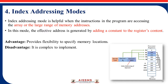Index addressing mode is helpful when instructions in a program access arrays or a large range of memory addresses. In array structures we use addresses like A[0], A[1], and so on. In this mode, the effective address is generated by adding a constant to the register content. The advantage is it provides flexibility to specify memory locations, and the disadvantage is it is complex to implement because there are multiple indexes and multiple reference points. All these addressing modes are used for performing operations or implementing programs as per the requirement of the project.